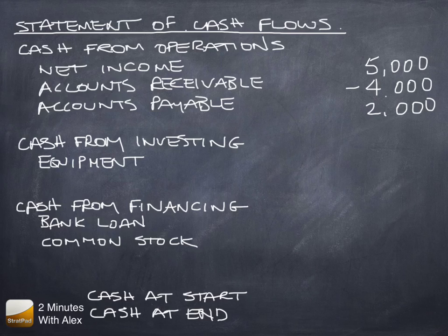When we subtotal this, $5,000 minus $4,000 plus $2,000 is $3,000.